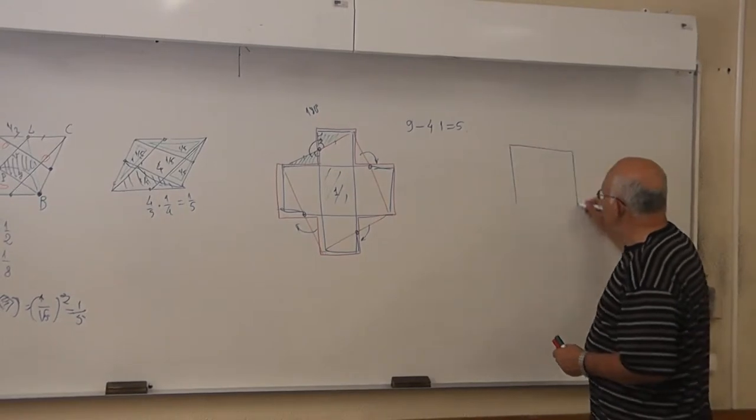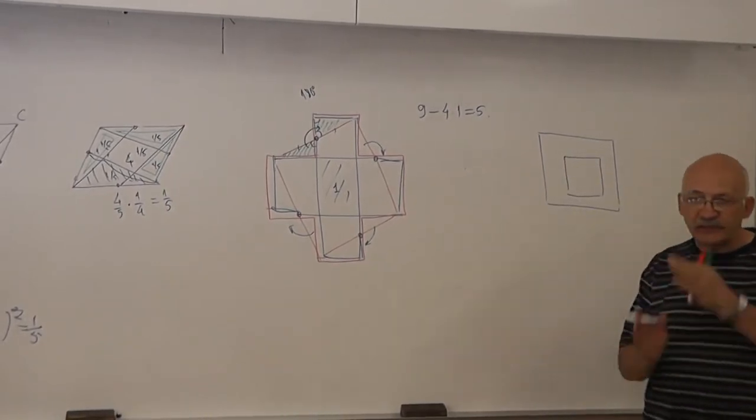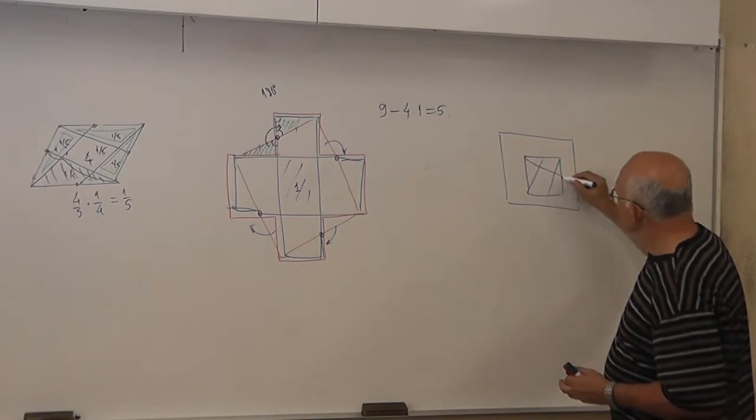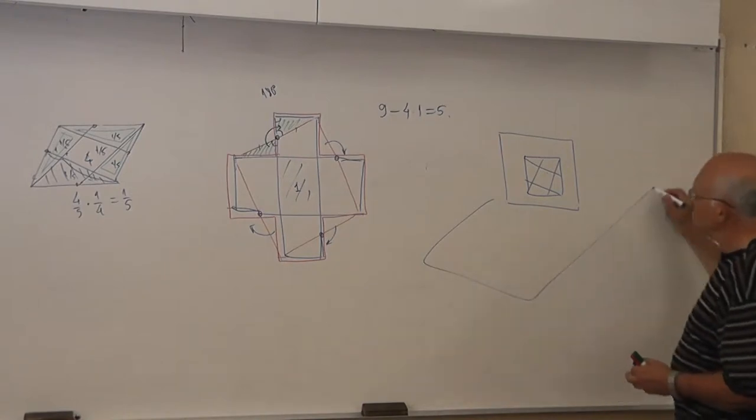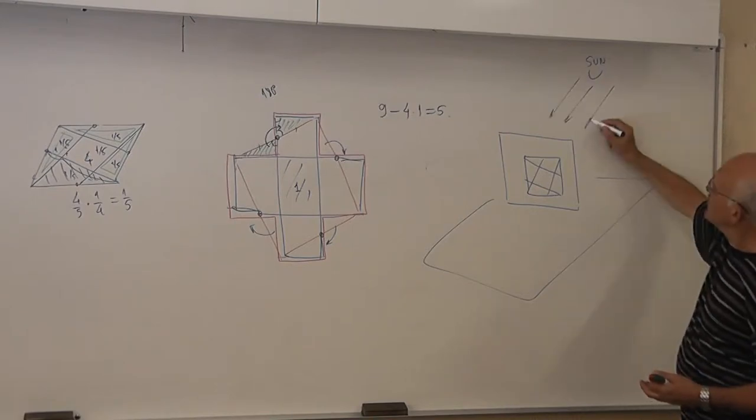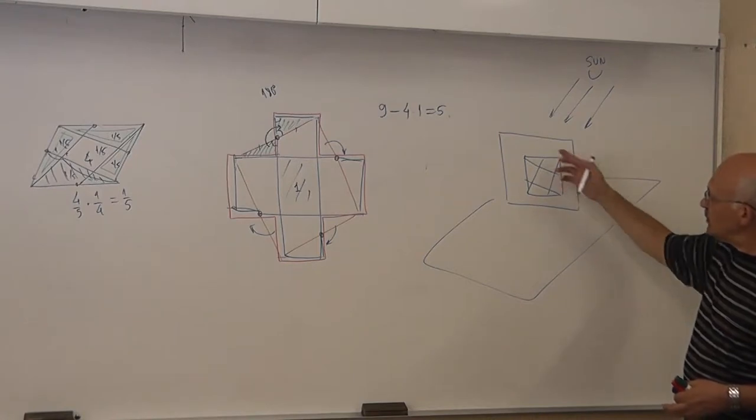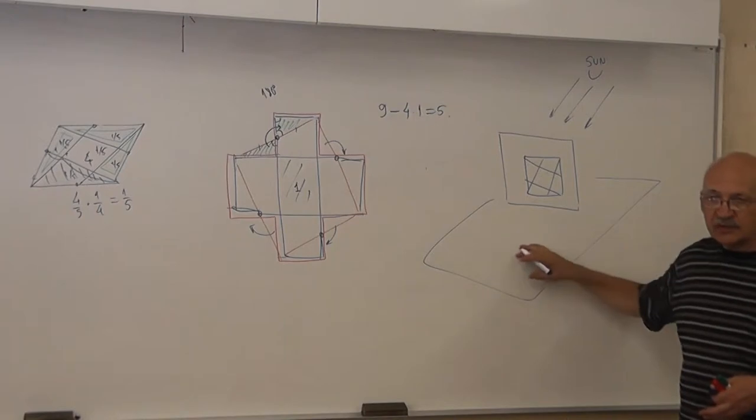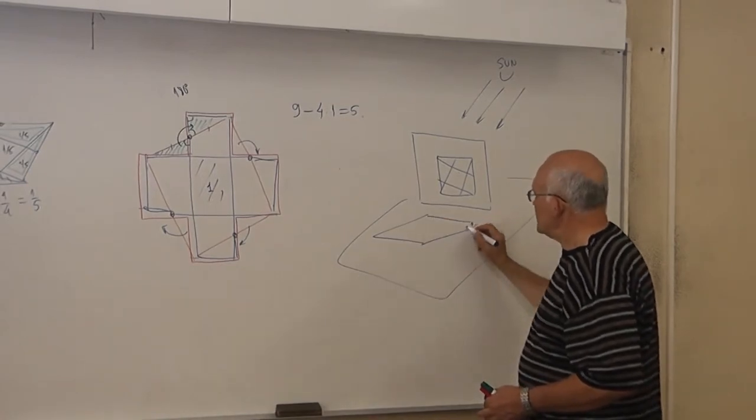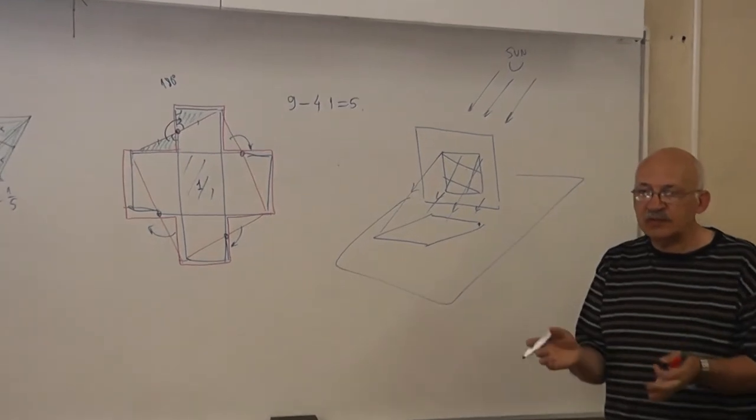So imagine that I draw this square on a sheet of glass and put it on the table. I take the sun, with rays of light coming from the sun, and these rays cast a shadow of this figure on the table. And the shadow will be deformed. If you take the shadow of a square, what will be the shape of the shadow?